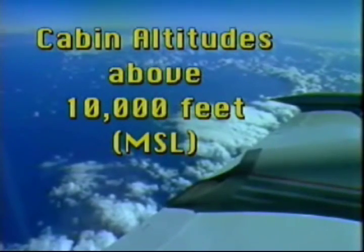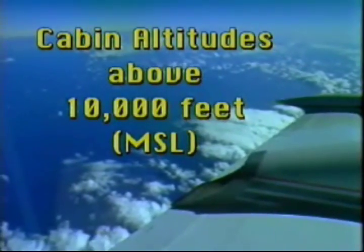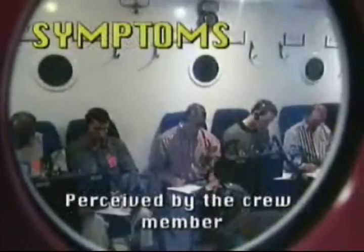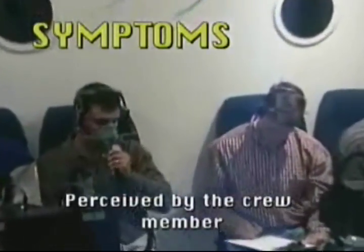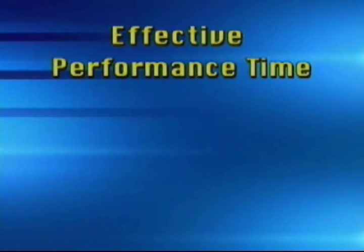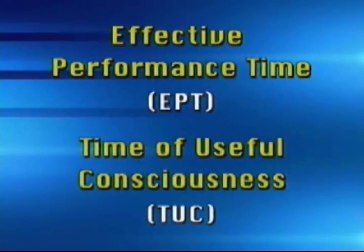Hypoxia symptoms are most likely to occur at cabin altitudes above 10,000 feet MSL. Hypoxia reactions can be classified into two types. Signs of hypoxia can be detected in an individual by an observer or other crew members. Symptoms of hypoxia are the sensations perceived by the crew member. Effective performance time, EPT, and time of useful consciousness, TUC, are two interchangeable terms used to describe human tolerance to hypoxia. These terms refer to the amount of time elapsed from exposure to an oxygen-poor environment to the time when an individual is no longer capable of performing routine flying tasks or taking proper corrective action against hypoxia.